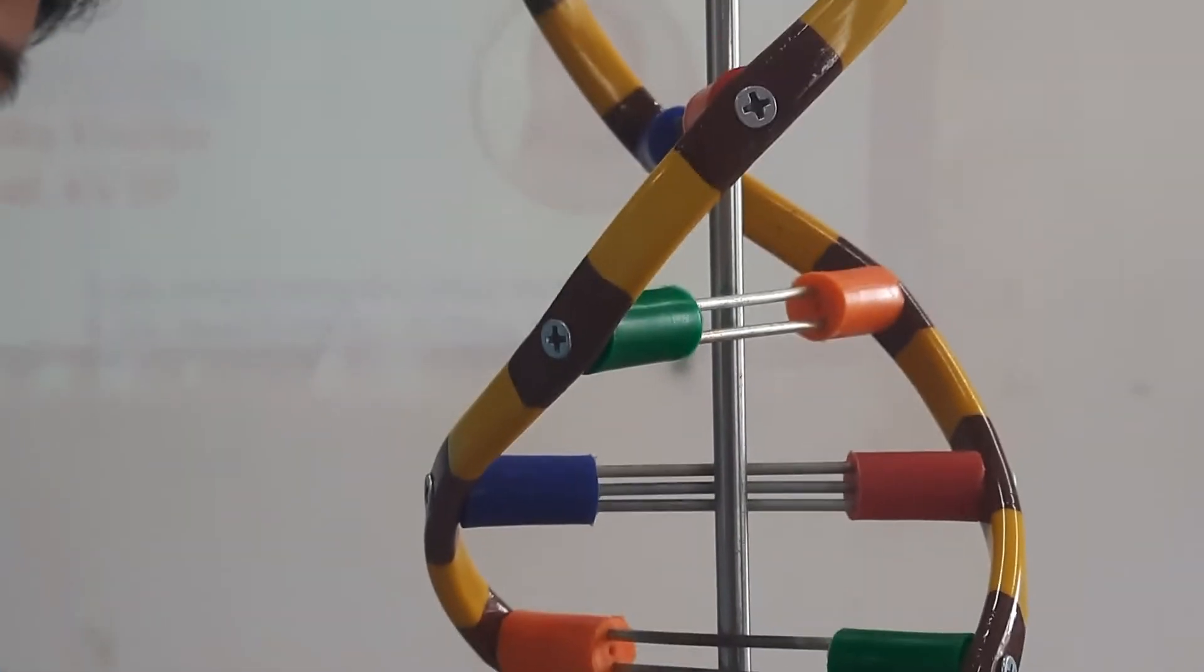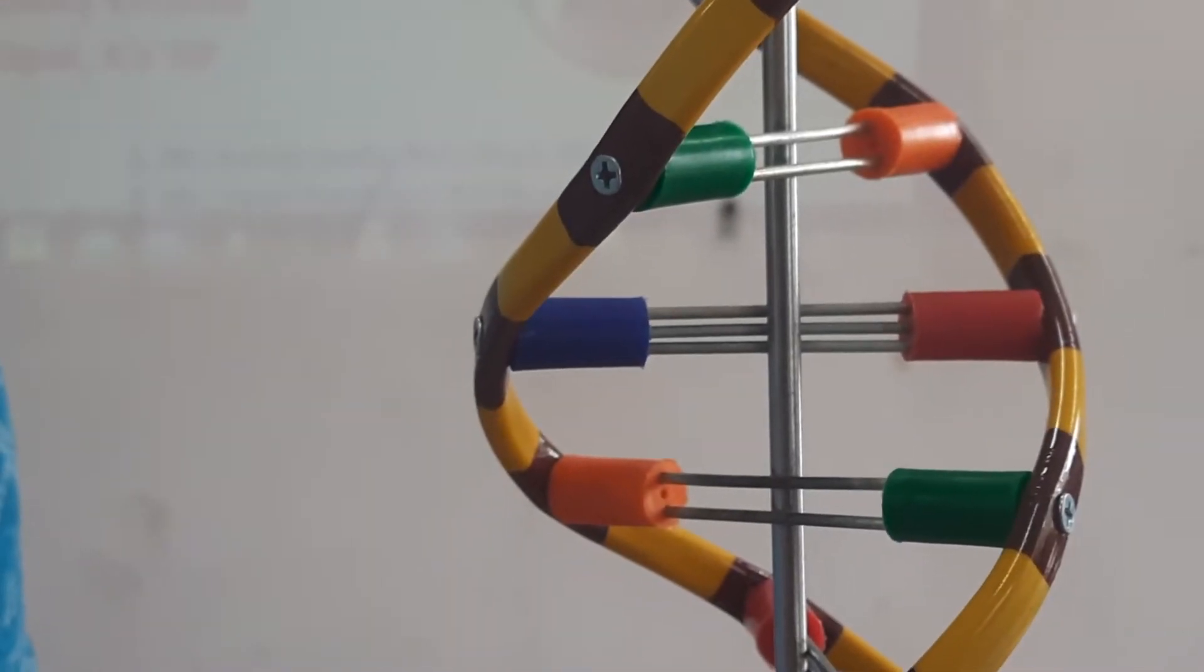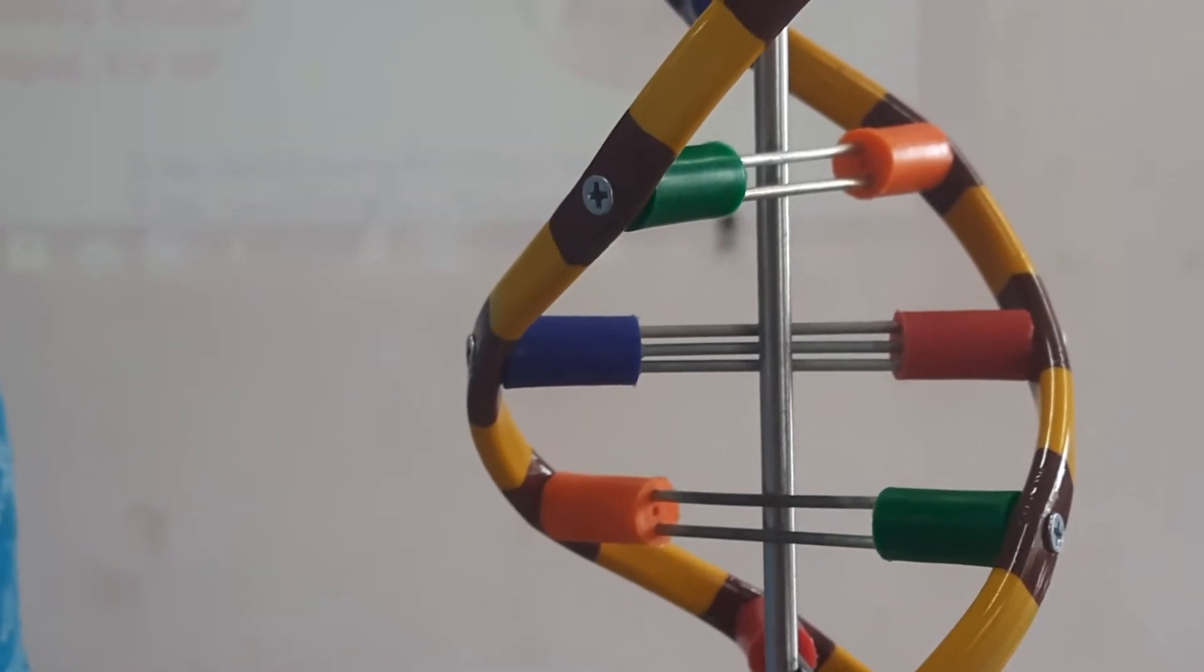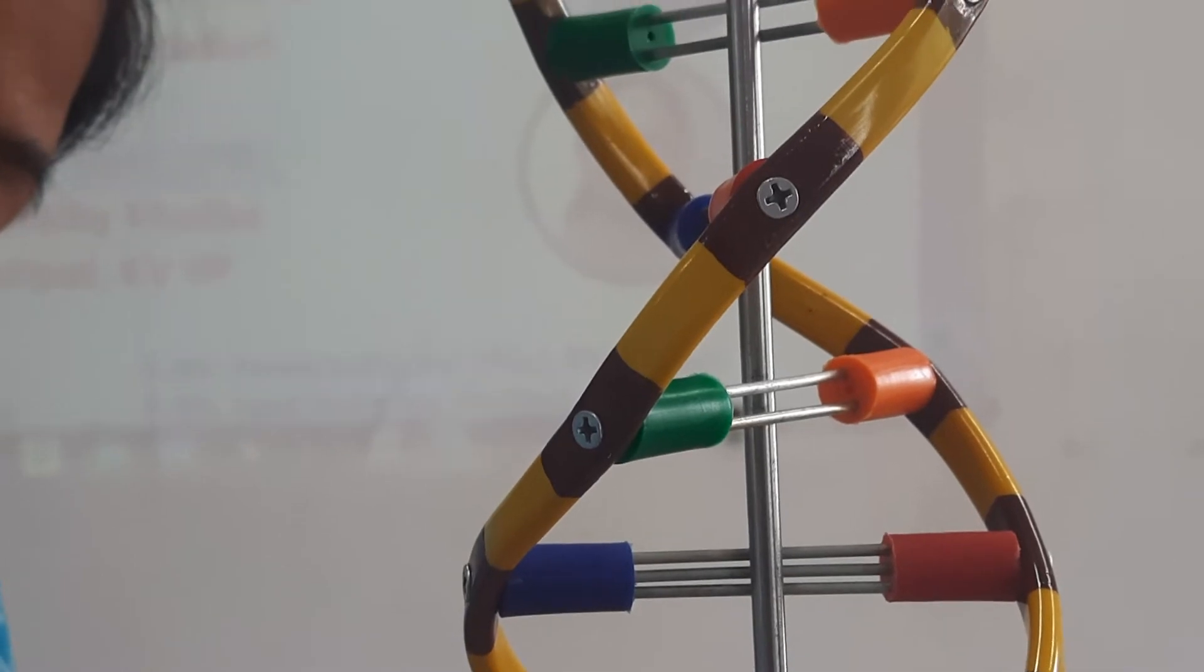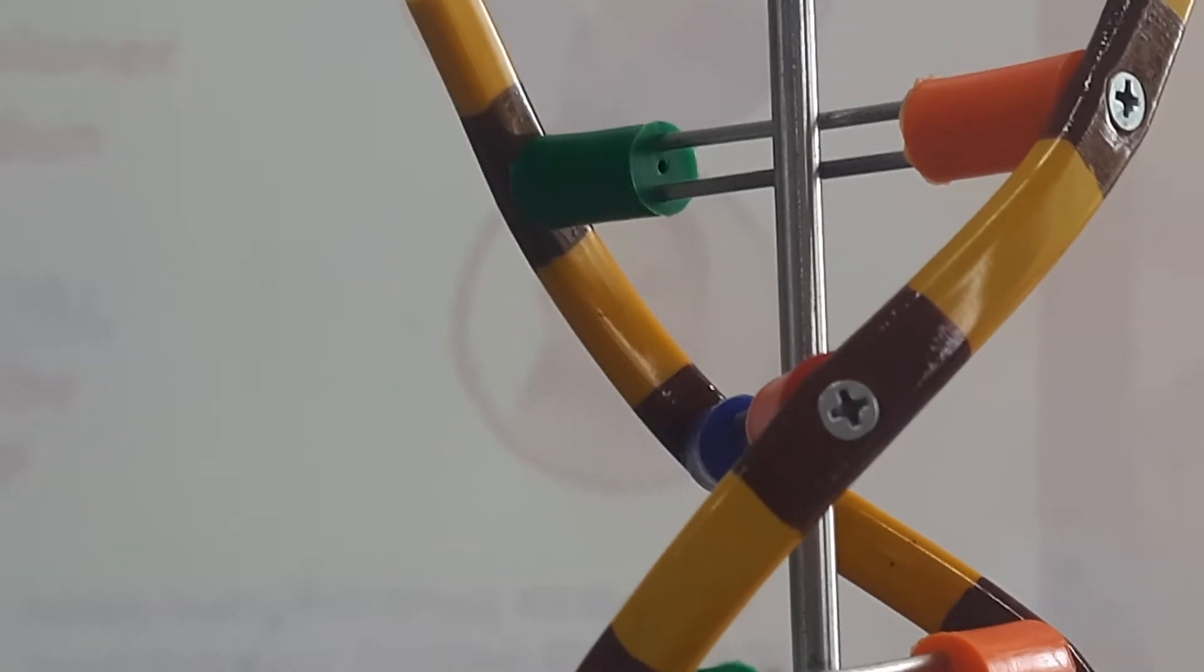Adenine is shown in green, guanine in blue, thymine in orange, and cytosine in red. Similarly, deoxyribose sugar is yellow, the phosphate group is brown, and the hydrogen bonds are shown in silver. All these are present here.